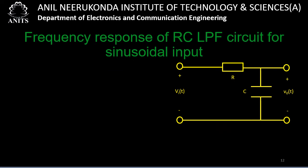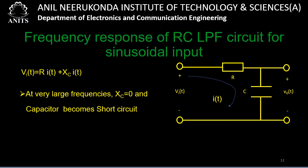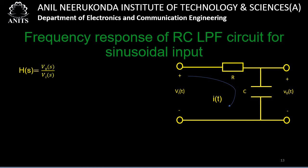Now let us consider the frequency response of the RC low pass filter for sinusoidal input. Let vi(t) be the sinusoidal input and i(t) the current. Applying KVL: vi(t) = R·i(t) + Xc·i(t). At very large frequencies, Xc = 0, the capacitor is short-circuited, i(t) = vi(t)/R, and v₀(t) = Xc·i(t) = 0 — confirming the low pass filter behavior.